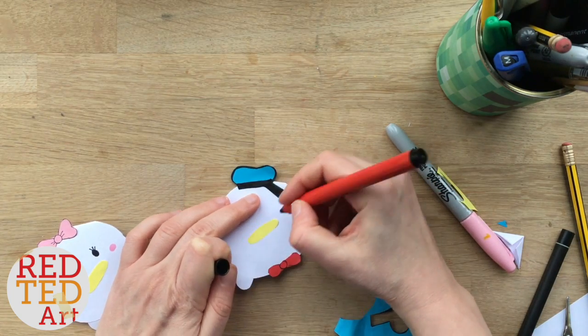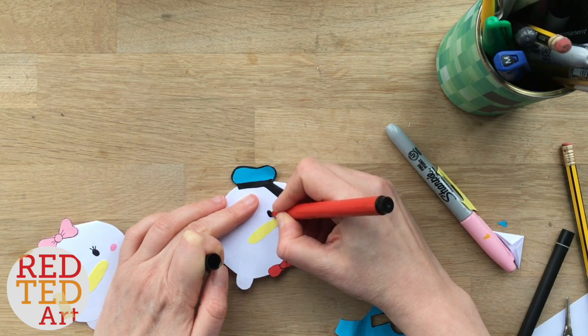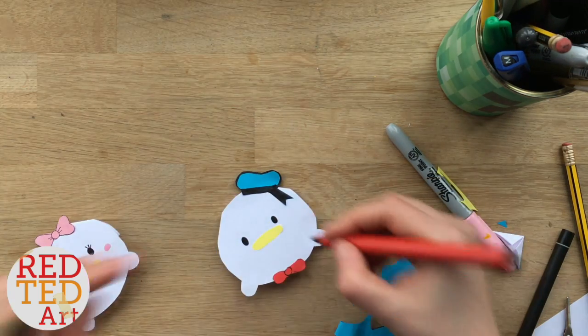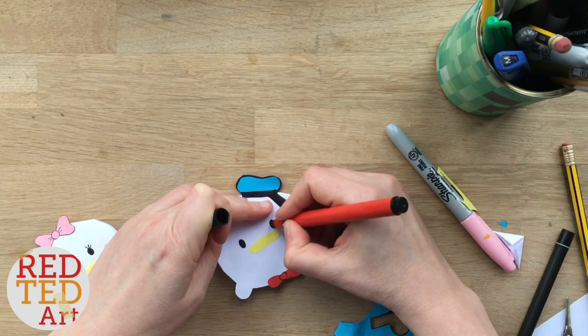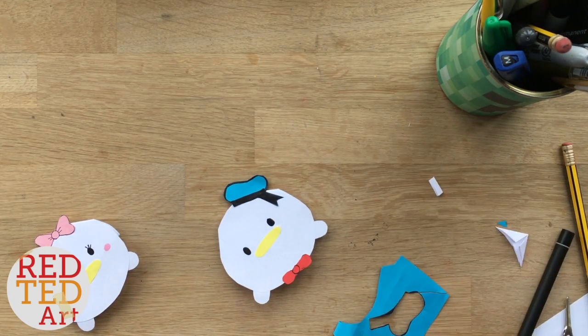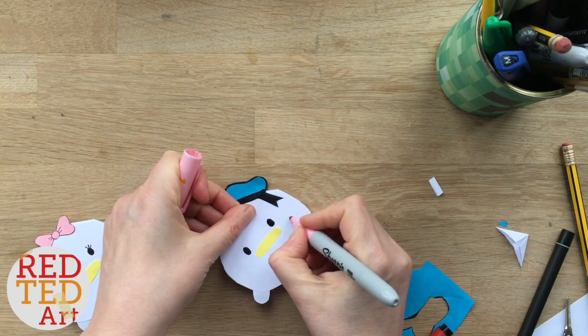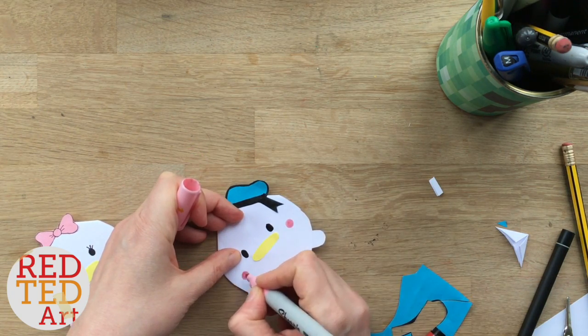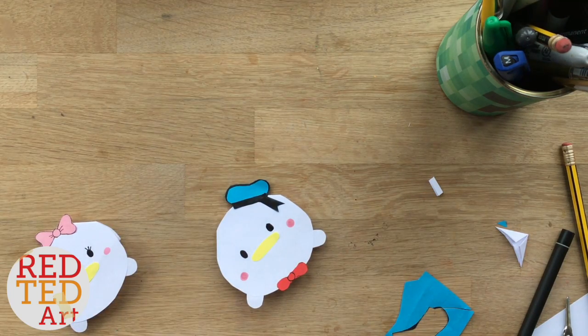Let's have a look. So cute. Oh no, the eyes and some rosy cheeks. Aren't they adorable? Really simple, isn't it? So if you love Tsum Tsums, you love Donald Duck, I think you'll love this little bookmark.